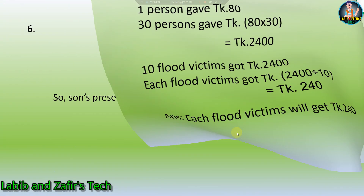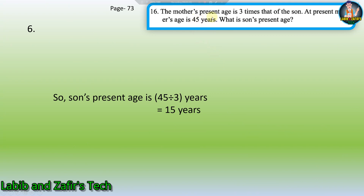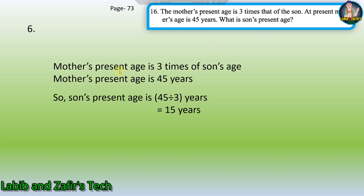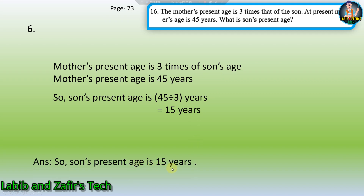Next word problem: the mother's present age is three times that of the son. The mother's present age is 45 years. What is the son's present age? Since mother's age is three times the son's age, the son's age = 45 ÷ 3 = 15 years. The son's present age is 15 years.